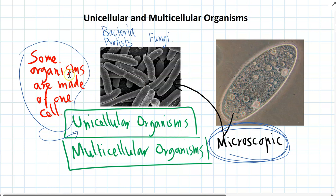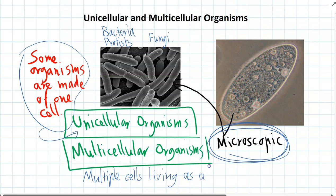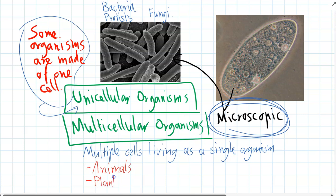Multicellular organisms are obviously made up of more than one cell combined and working together — multiple cells living as a single organism. The groups of species that are multicellular include us, as part of the animal kingdom. All animals are multicellular, and it's the same with plants.